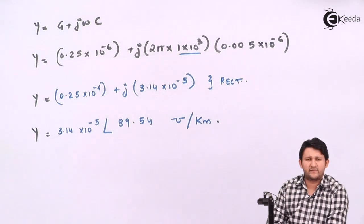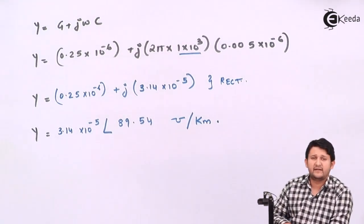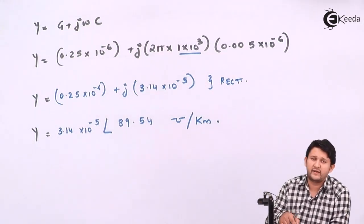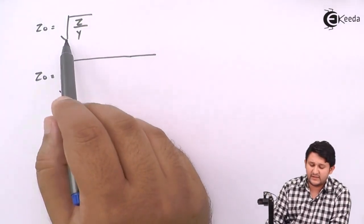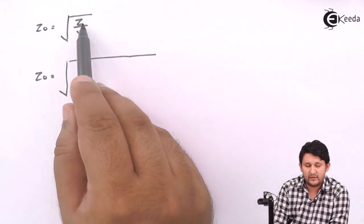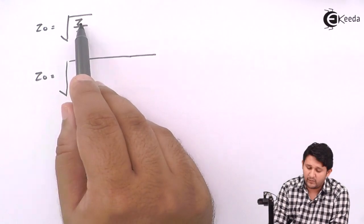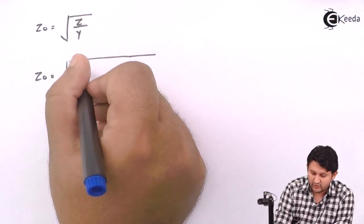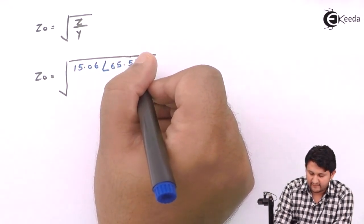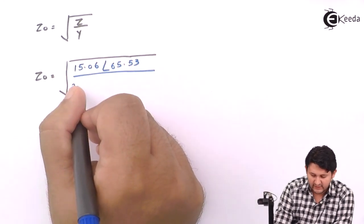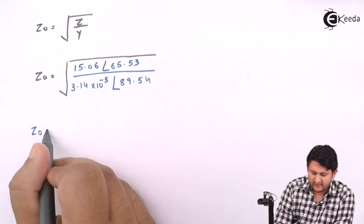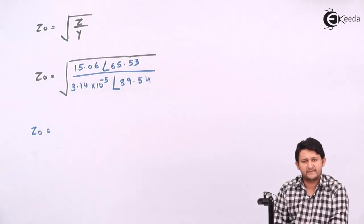After finding Z (impedance) and Y (admittance), we can now find characteristic impedance Z0. The formula is Z0 = √(Z/Y). So put in Z = 15.06∠65.53° divided by Y = 3.14×10⁻⁵∠89.54°.